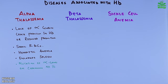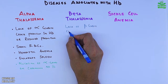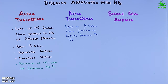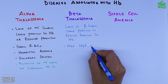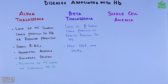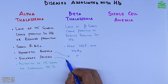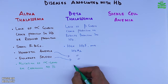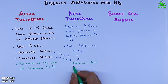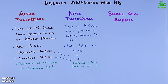Beta thalassemia is due to lack of or reduced production of beta globin chains. In beta thalassemia patients, there are high levels of hemoglobin A2 and fetal hemoglobin. The symptoms are similar — hemolytic anemia and enlarged spleen — and the disease is caused by mutation of beta globin genes on chromosome 11.